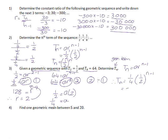Now, a quarter can be written as 2 to the power of negative 2, multiplied by 2 to the power of n minus 1. Since they have like bases, we add the exponents: negative 2 plus n minus 1 gives n minus 3. So the final general term is 2 to the power of n minus 3.